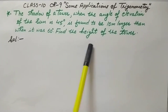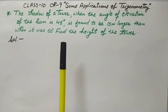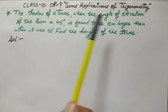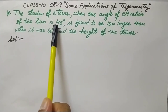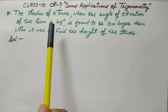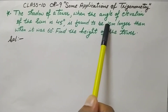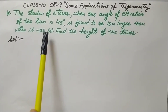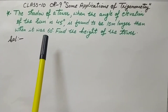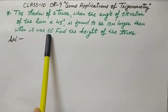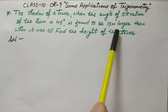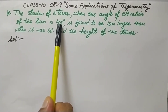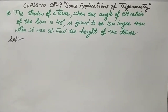In this question, one tower is given. When the angle of elevation of the sun is 45 degrees, the shadow of this tower is 10 meters longer than when the angle of elevation is 60 degrees. It means at 60 degrees angle of elevation, the shadow is 10 meters smaller than at 45 degrees. Let's draw the figure, then we'll understand the question.